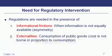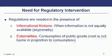The need for regulation and intervention: regulators are needed in the presence of informational frictions, meaning when information is not equally available — information asymmetry — such as insider trading, where certain people know certain information, and regulations exist to prevent things such as insider trading. We also have externalities, looking at the consumption of public goods such as parks and defense, where we need regulation so that the cost is borne in proportion to consumption.